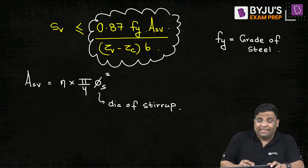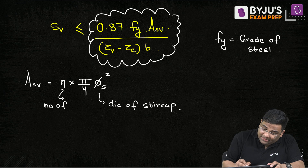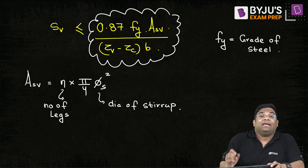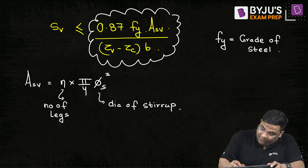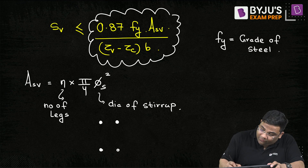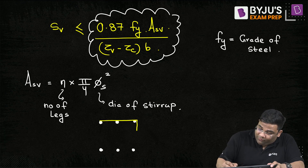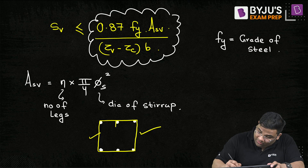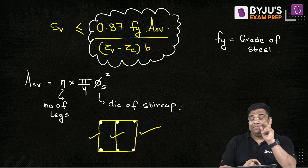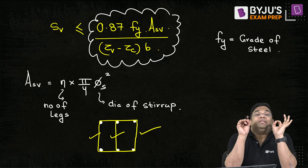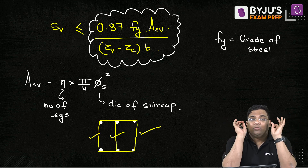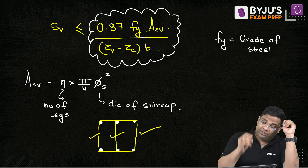N is the number of legs, and the minimum number of legs in a stirrup is 2. For example, if you have a beam with 3 compression bars and 3 tension bars and you provide a single stirrup around them, there are 2 legs. If you provide an additional internal stirrup, there are 3 legs. This will be mentioned in the question, so don't worry. This gives you Asv.